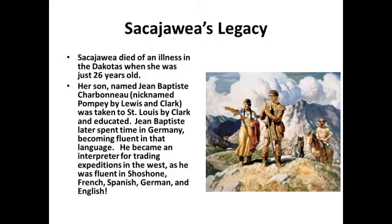Sacagawea died of an illness in the Dakotas when she was just 26 years old. Her son, the newborn she had carried on the expedition, was named Jean-Baptiste Charbonneau — nicknamed Pompey by Lewis and Clark. William Clark took the child under his wing and ensured he received a Western education. Jean-Baptiste later spent time in Germany, became fluent in that language, and became an interpreter for trading expeditions to the West — fluent in Shoshone, French, Spanish, German, and English. Sacagawea succumbed to a European-introduced illness, but her son, the offspring of a white man and a Native American woman, had the biological defense to withstand some of those illnesses.